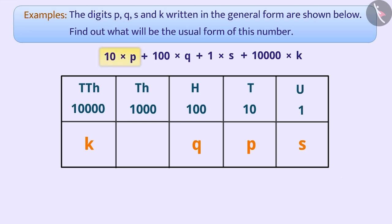Here, 10×p shows that p is in the tens place. Similarly, 100×q shows that q is in the hundred place. Similarly, 1×s shows that s is in the units place. And 10,000×k shows that k is in the place of 10,000.